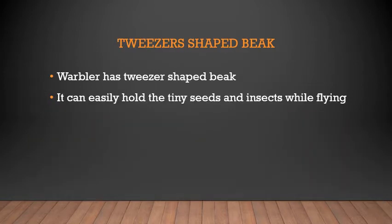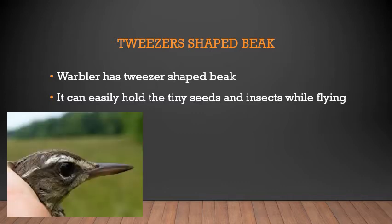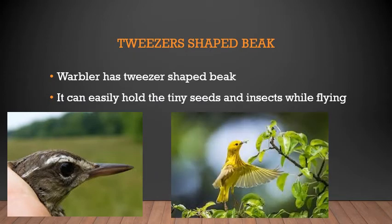Next is the tweezer-shaped beak. The warbler has a beak which is tweezer-shaped — thin and small, like the tweezers you may have at home. It is used to hold tiny seeds and insects while flying. The example is the warbler.